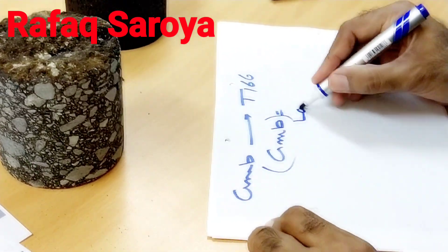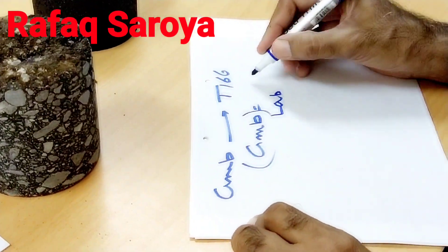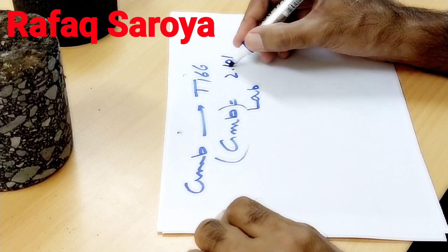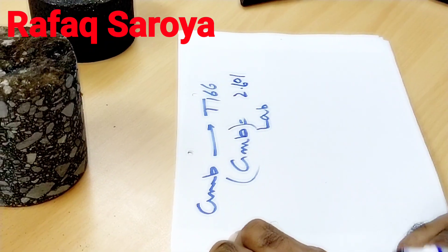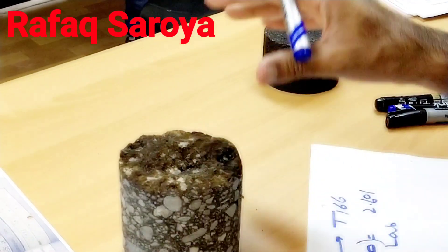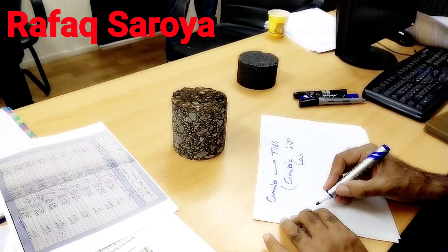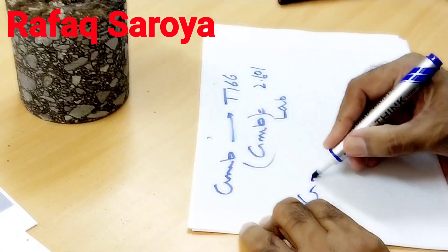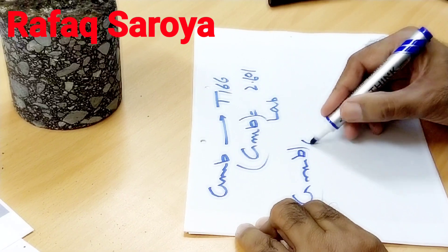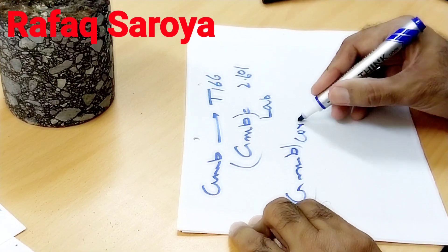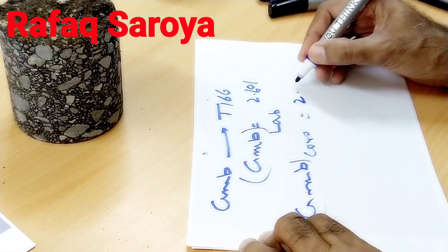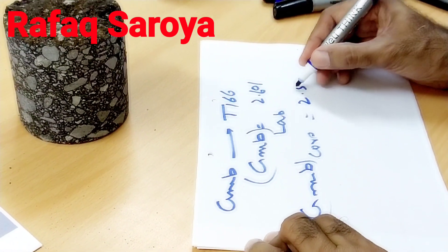As I have already told you and as we determined in our previous video, the GMB determined in the lab — let me write it down here for your reference — its value was 2.601. Now for the second sample, its GMB is determined by the same method. It is a core and its value was found to be 2.581.